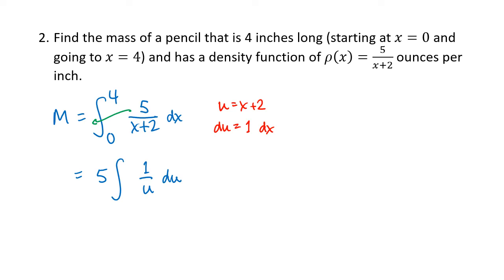So I've got 5 times the integral of 1 divided by u, and dx and du are the same thing. Now what about my bounds? My old bounds were x equals 0 and x equals 4. So when x equals 0, that means that u is going to be 0 plus 2, which is 2. So my new lower bound is the number 2. My old upper bound was x equals 4, and when x equals 4, u is going to be 4 plus 2, which is 6. So my new upper bound is 6.